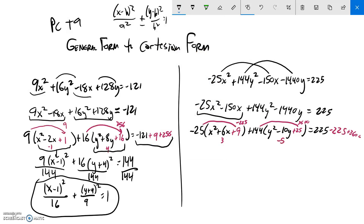Great. So then now, I have a negative 25. This factors to x plus 3. And that thing is squared. Plus 144. This thing factors to a y minus 5 squared. 225 minus 225 is 0. So that leaves me a 3,600.